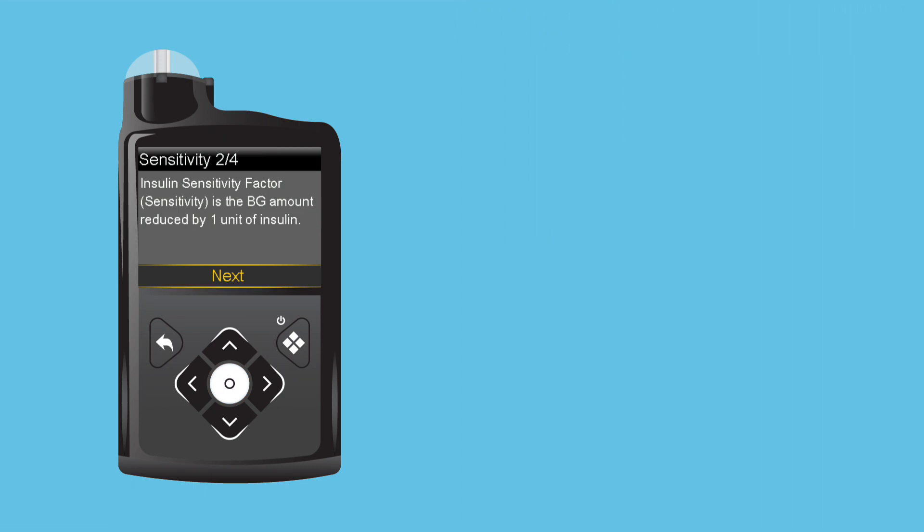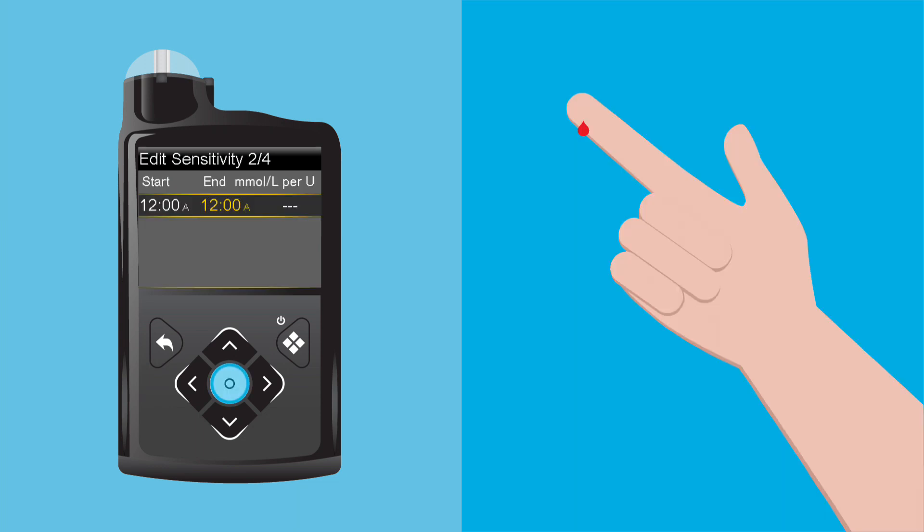Now Andy sets his sensitivity factor. This is how much one unit of insulin reduces his blood glucose. Andy selects Next and then selects the time segment. Andy has only one sensitivity factor, so he presses Select again. Using the arrows, Andy enters the sensitivity factor and presses Select. He selects Next to continue.